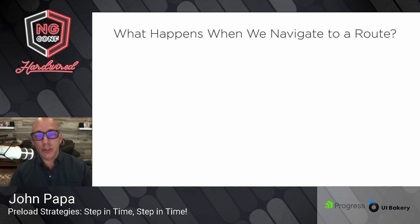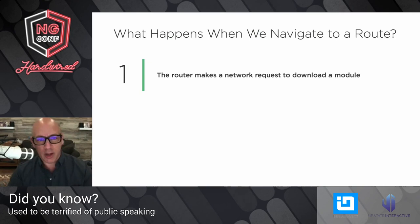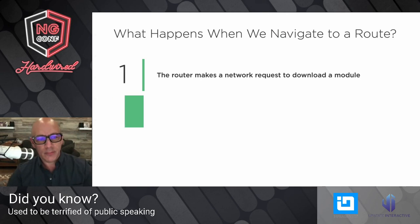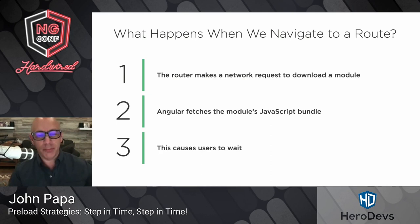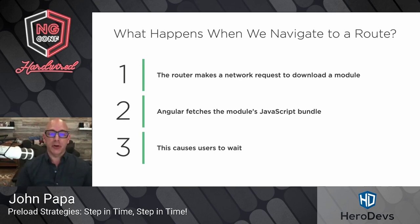So what happens when you navigate to a route? The router is going to make a network request to download a module. You click on a route, and inside the router it says: do I have this lazy-loaded bundle currently in the browser? If it doesn't, it's going to fetch that bundle. Once it fetches it, it's going to cause the users to wait. So depending upon the speed of your app, the speed of your network, and how you've preloaded, that wait time could be small or it could be big.